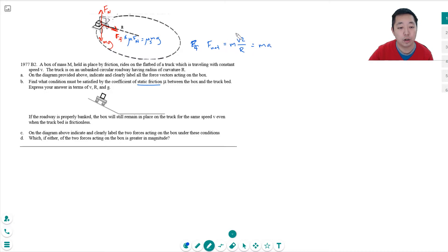So mv squared over r. So the force of friction has to be at least this much. Because if it were less than this much, then we wouldn't be doing this acceleration.